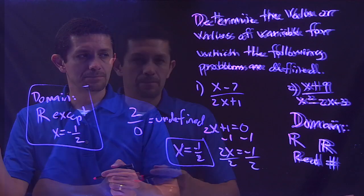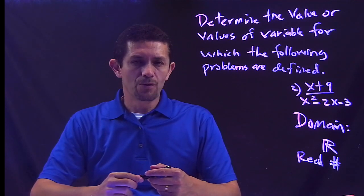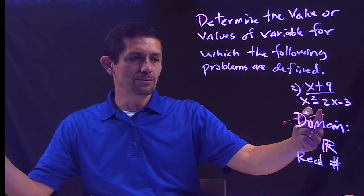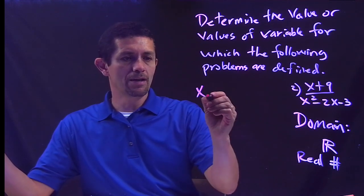This is how you handle this. Now let's work on the second one. Like we said in the first one, my domain is going to start with the real numbers and I don't want my denominator to be 0. So what I'm going to do is bring that x squared.